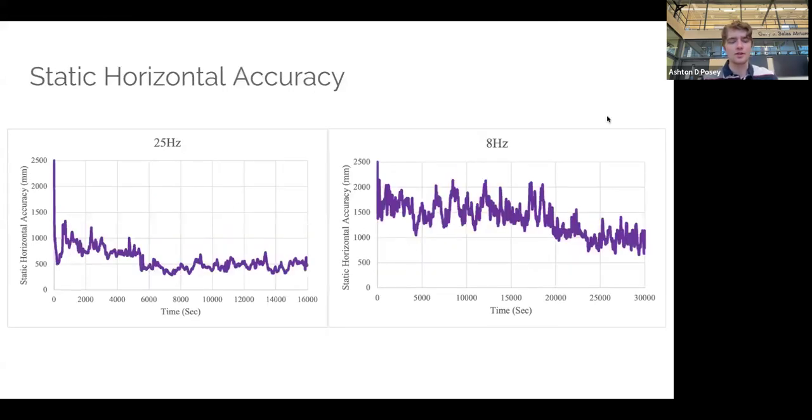And then moving into positional accuracy, the results are actually switched. So the 25 hertz seems to have a greater static horizontal accuracy versus the 8 hertz. The units on the left are millimeters, and the positional accuracy of 25 hertz seems to be around 1,000 millimeters in the beginning, and then it drops down to 500 millimeters towards the later portion of the test.